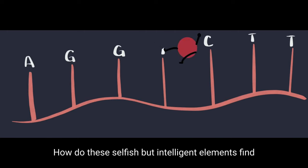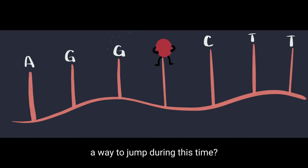How do these selfish but intelligent elements find a way to jump during this time? And how do our bodies and cells fight back against them? These are the questions I am hoping to answer during my PhD.